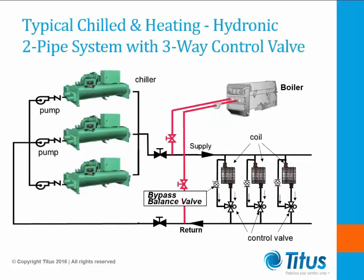In a constant volume water flow system, when the water flows through the coil, there is a certain amount of resistance or pressure drop that the pump must overcome. When the valves allow the water to bypass the coil, the resistance will be less, causing the system to become unbalanced. Therefore, a balancing valve is installed in the bypass to maintain a constant pressure drop as the water flow is modulated around the coil. This type of constant flow system with a three-way control valve is simple from a control and layout perspective, but the pumps will continuously run at full power even during part load conditions. Because of this, many jurisdictions no longer allow this type of system due to energy concerns.